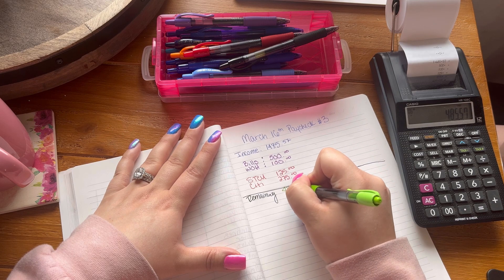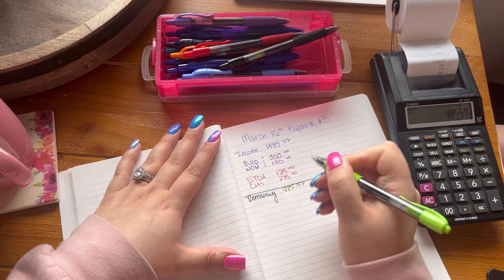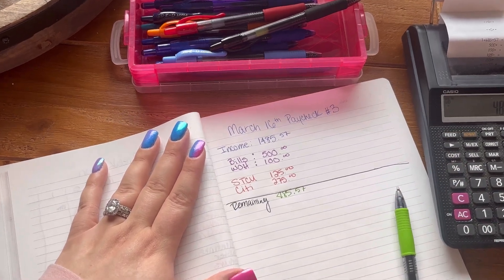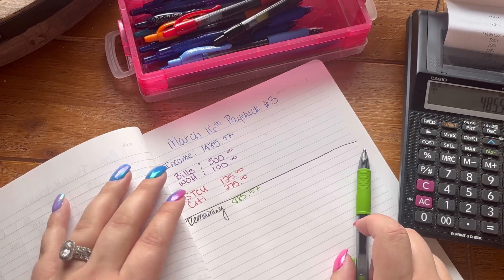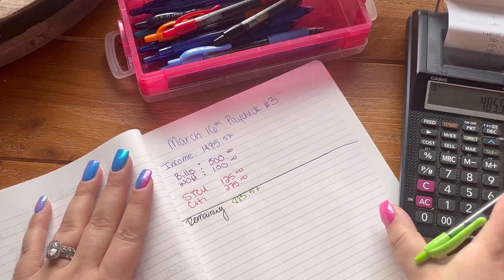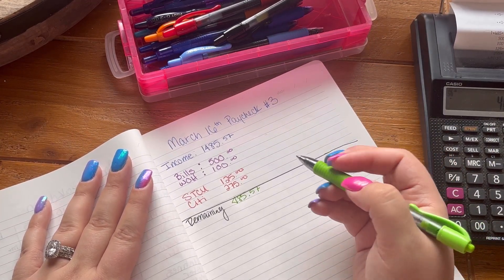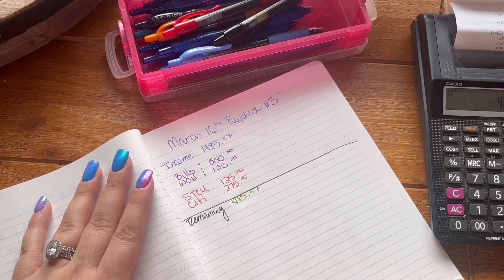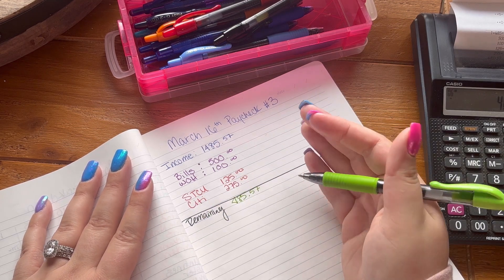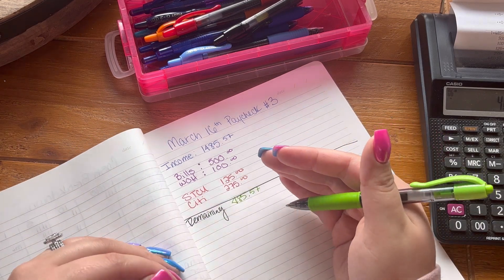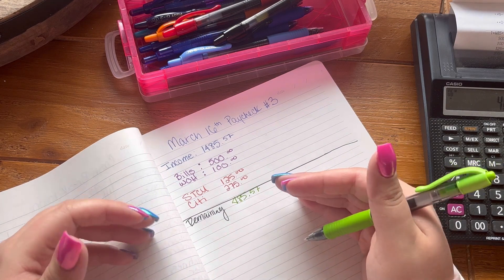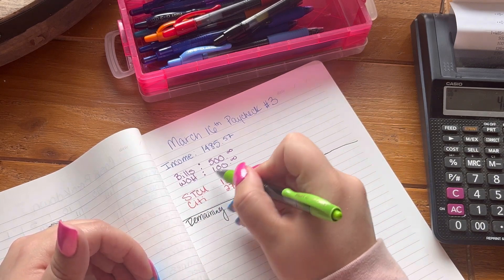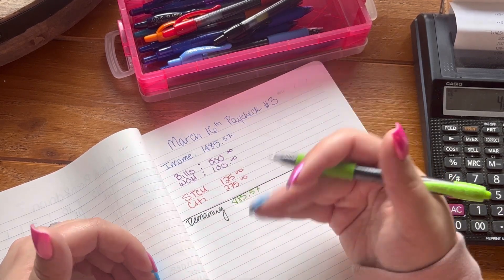So once we have all of that, this is to keep us together. We're going to total that and then give ourselves a remaining balance. So remaining, we have $485.57.